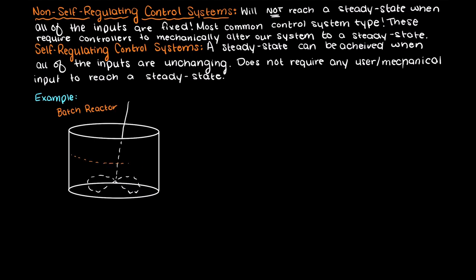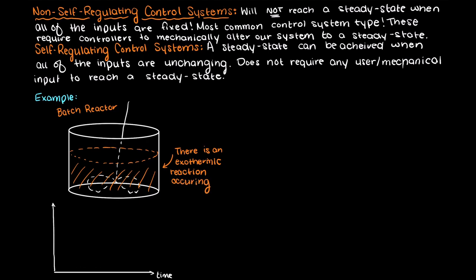Let's imagine that we have a simple batch reactor with an exothermic reaction occurring within our tank. This means that as more molecules in our system react they are releasing more energy and our fluid in the tank is increasing in temperature because of this.